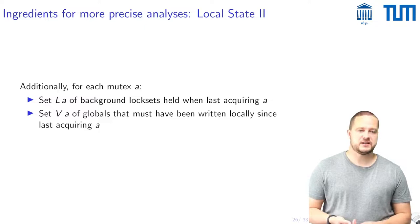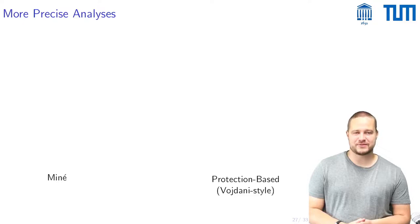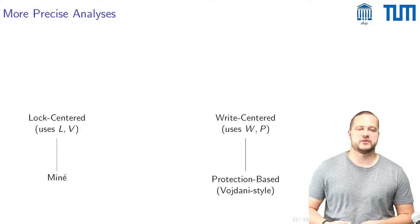And with these ingredients we have then devised some more precise analyses. So the baseline here are the Miné analysis and the protection based analysis which is a Vojdani style analysis. And then we give a lock centered analysis that uses l and v and is an improvement of Miné's analysis and we also give a write centered analysis which uses w and p and improves on the protection based analysis.